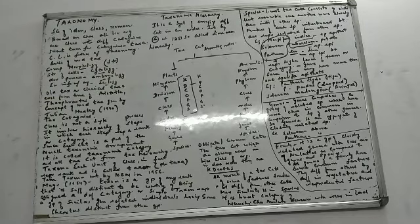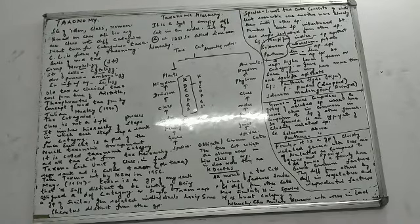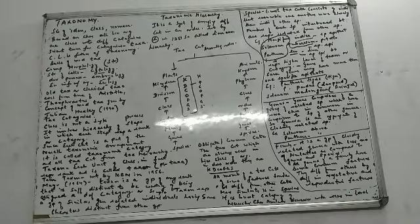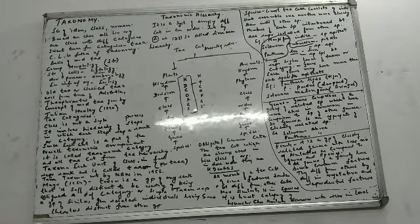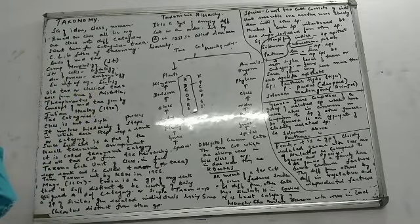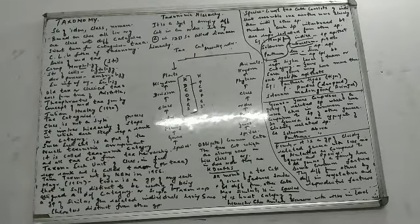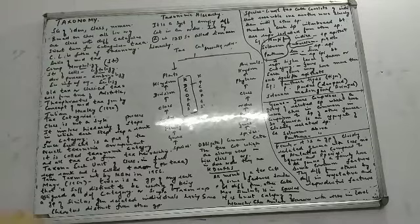This branch of taxonomy is not new. Right from many thousands of years back, people have been trying to classify things — earlier on the basis of uses. The older system of taxonomy is known as classical taxonomy. Two main people associated with classical taxonomy are Aristotle and Theophrastus.